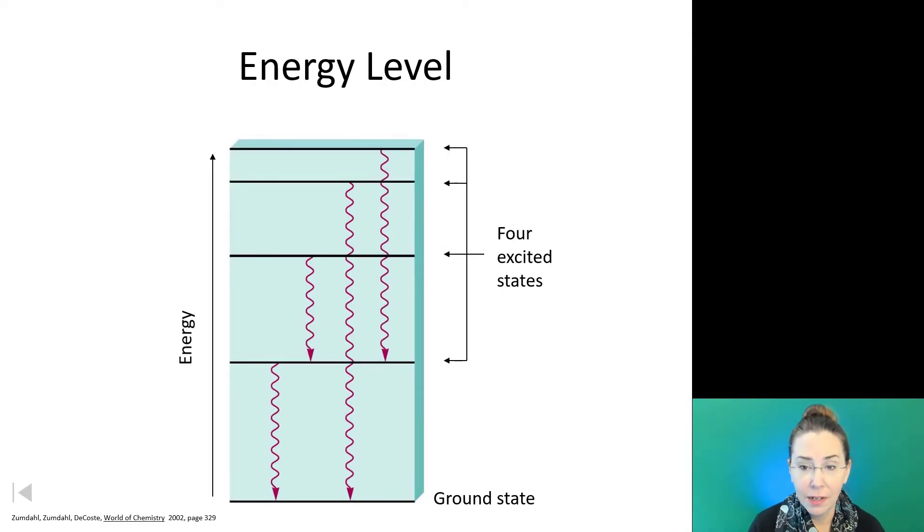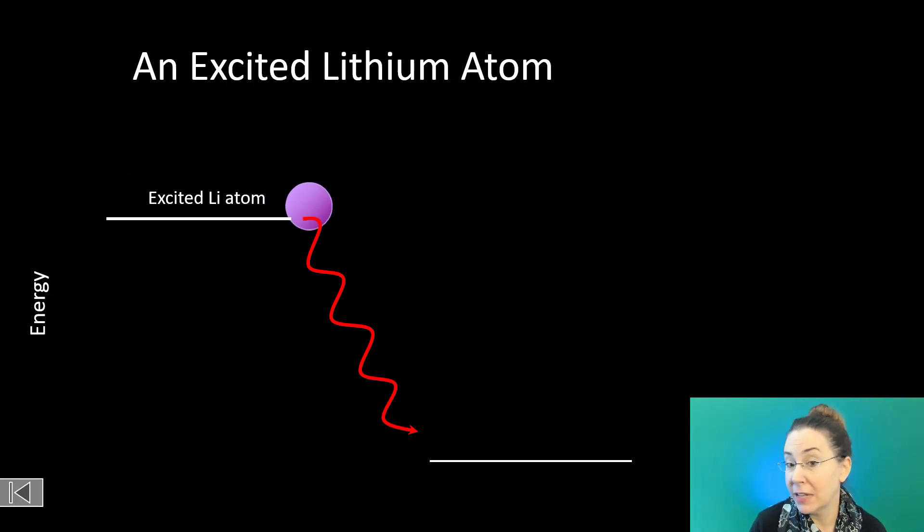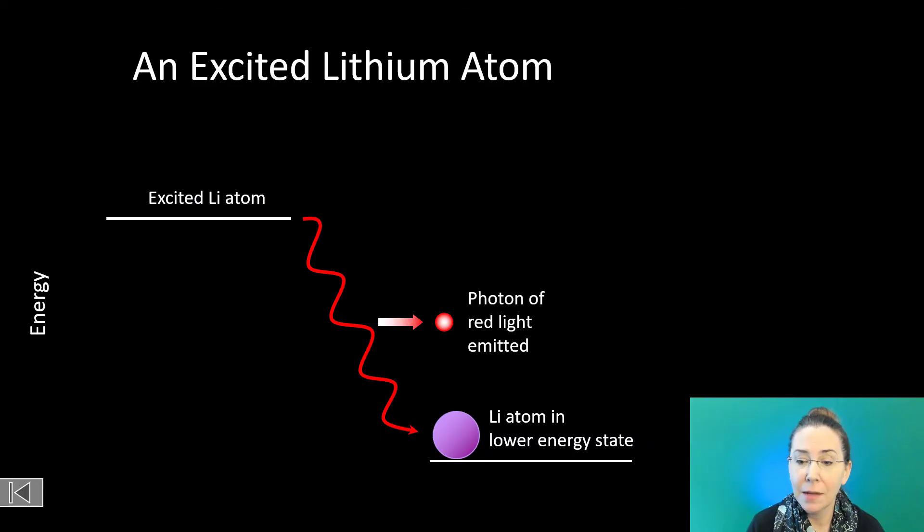Let's take this further. If we have four possible excited states where we have four different levels of energy being absorbed by those electrons on their way up and released on their way down, we're going to see four different colors of light corresponding to the amounts of energy those electrons absorbed. The amount of energy absorbed will always equal the amount released. All those rules of matter and energy still apply here. If we have an excited lithium atom that absorbs energy and falls back to ground state, we're emitting a photon of red light because we only moved one energy level down.